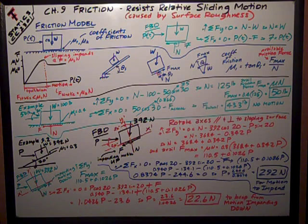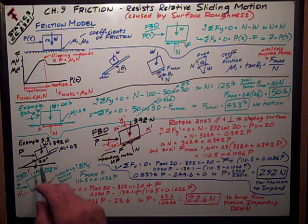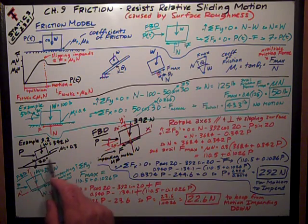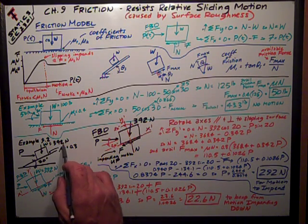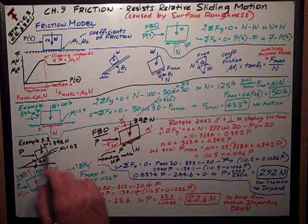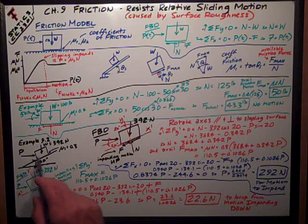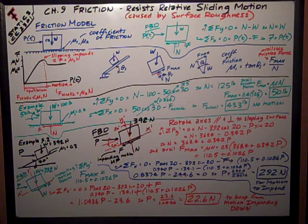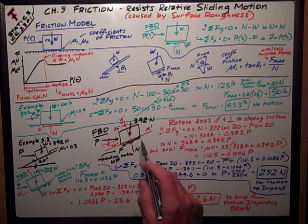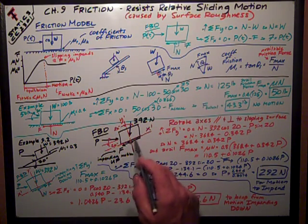Here's a sloping example to show another key point of these friction problems. This is example 9.2 from the book. I have a 20-degree sloping surface, coefficient of friction of 0.3, and the weight of the block is 392 newtons. I want to find out some things about the pushing force P, which is horizontal. I do a free body diagram, which of course is the key to the highway.